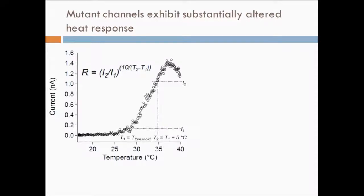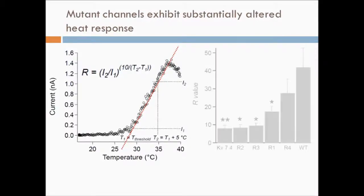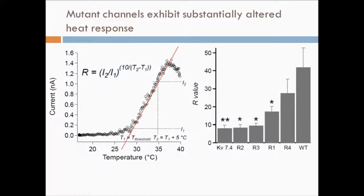Lastly, since one characteristic feature of the highly temperature-sensitive activation of thermal TRP channels is the steep current-temperature relationship, we compared the slope of heat-induced current activation using an R-value as shown here. We found that the turret replacement channels showed a much smaller R-value than wild-type TRPV1.